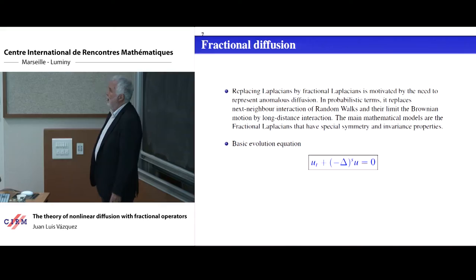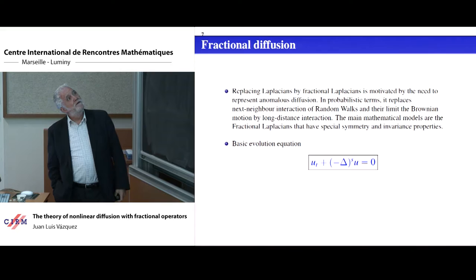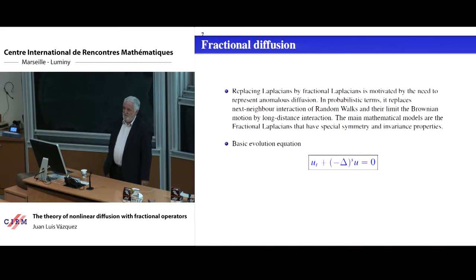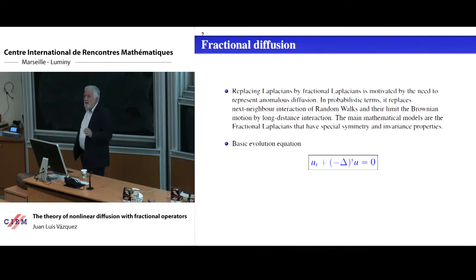Around 2004, Luis Caffarelli proposed to people around his group that it was the time to do nonlinear models based on fractional diffusion. In principle, the idea of fractional diffusion is linear. The fractional heat equation is simple to write: u_t plus minus-Laplacian to power s equals zero. The power s is some interpolation power of the Laplacian. If you define the Laplacian to an intermediate power between zero and one, you can generate a semigroup.